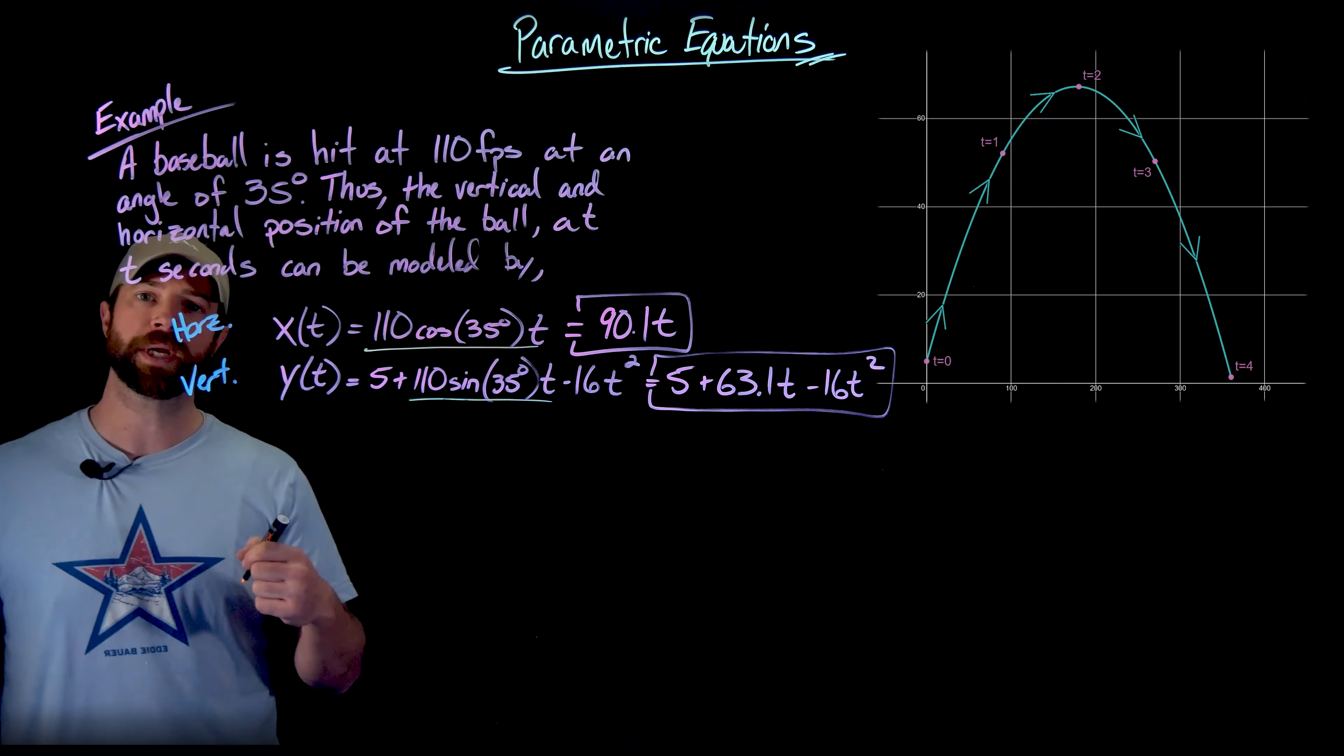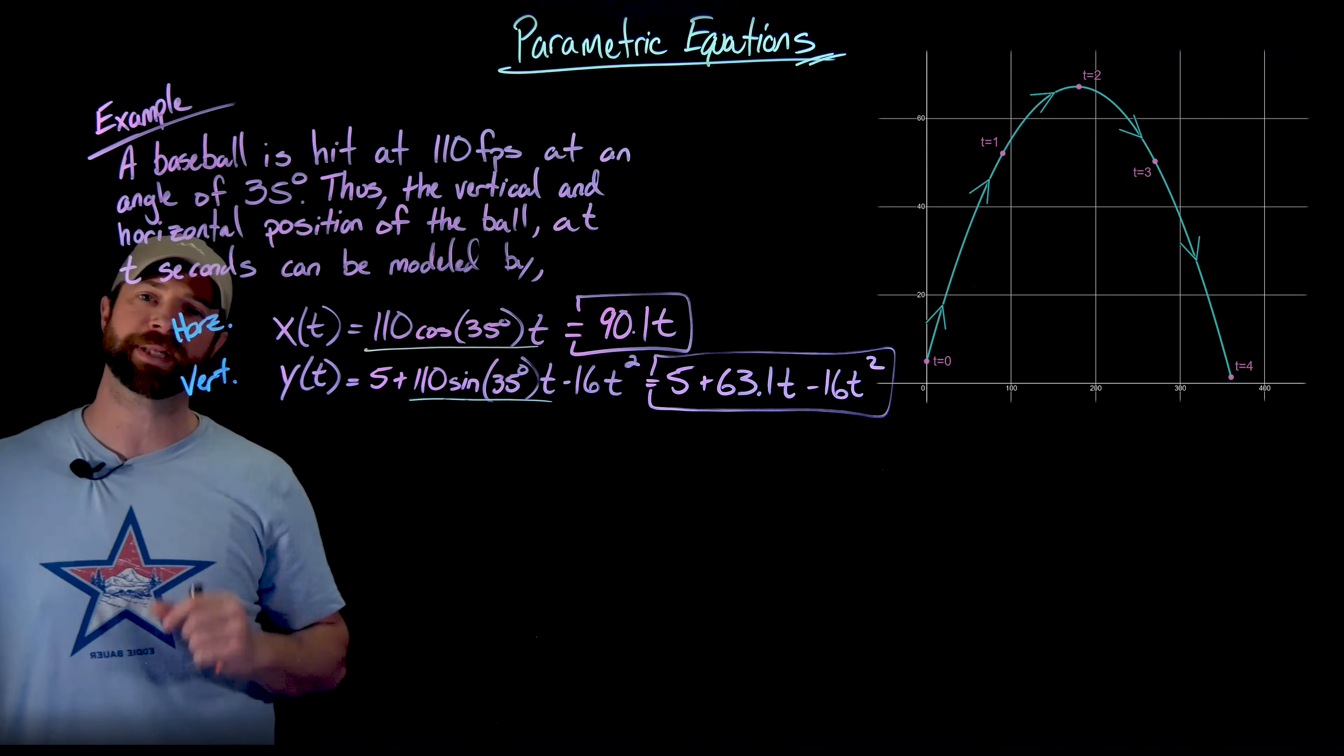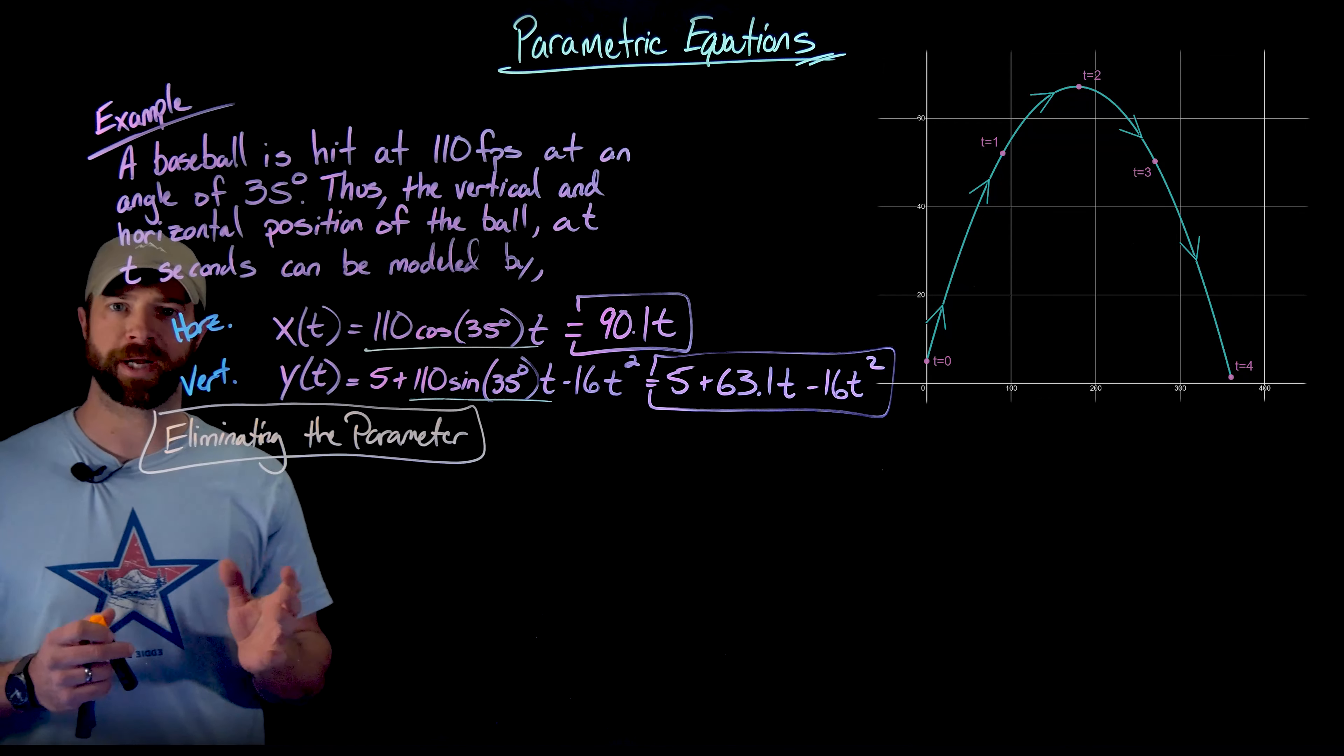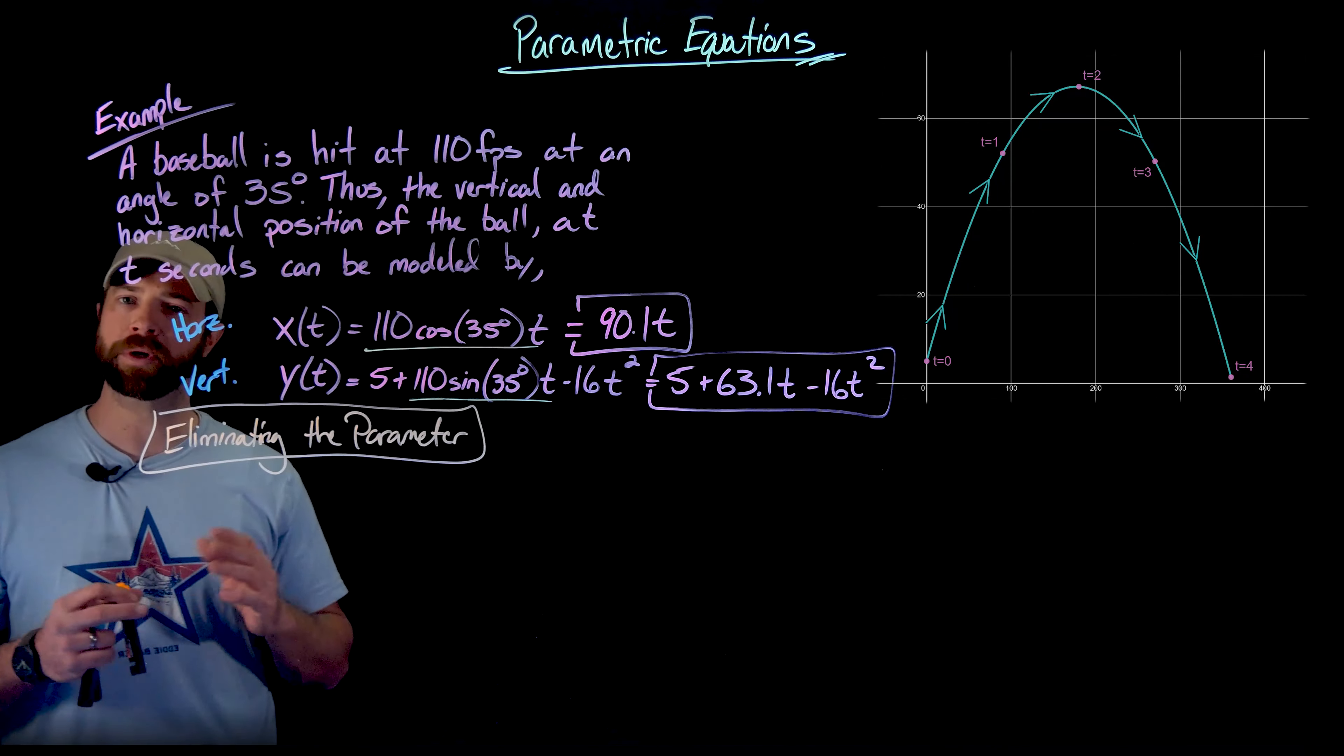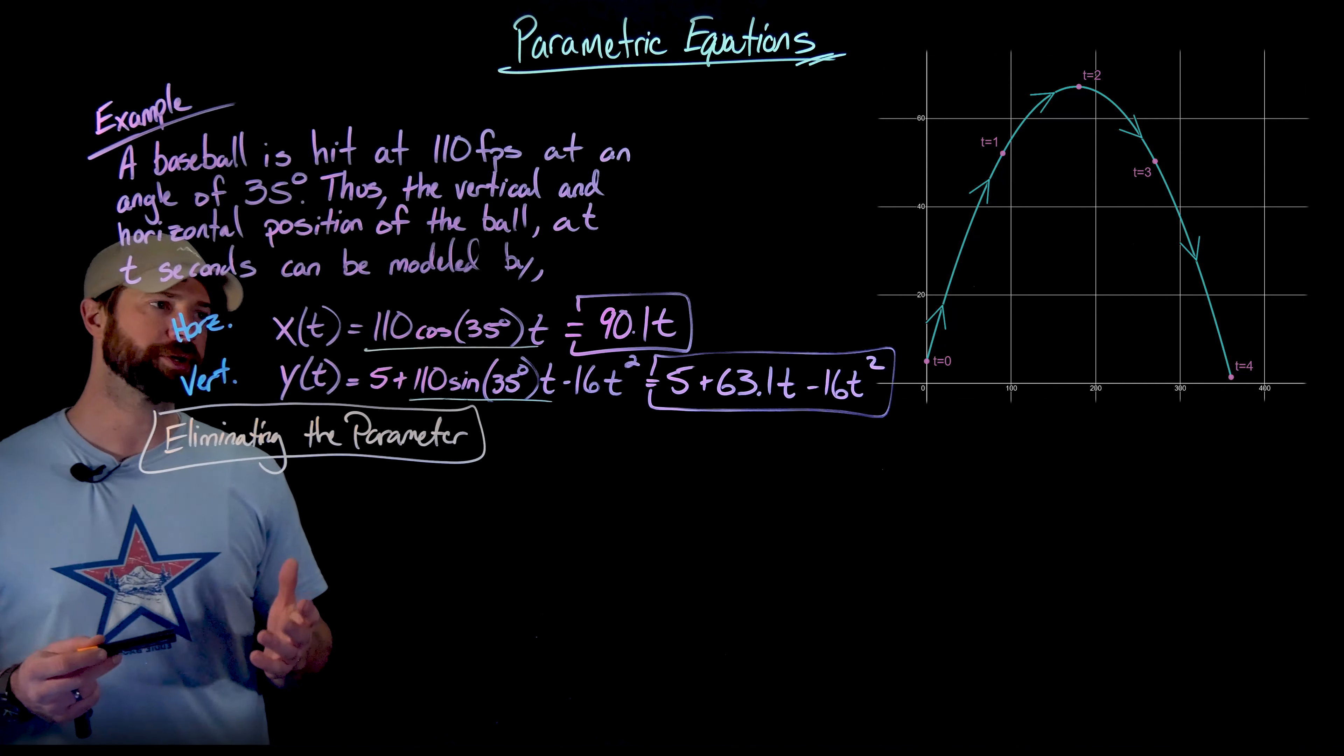Though if we wanted to look at the relationship between x and y directly, we actually can do that. We call this eliminating the parameter. And what it allows us to do is write this as an equation, this relationship between x and y as an equation directly relating x and y. For a lot of different reasons, this idea of eliminating the parameter is a really important skill. I won't go into that now, but you're going to see more examples.